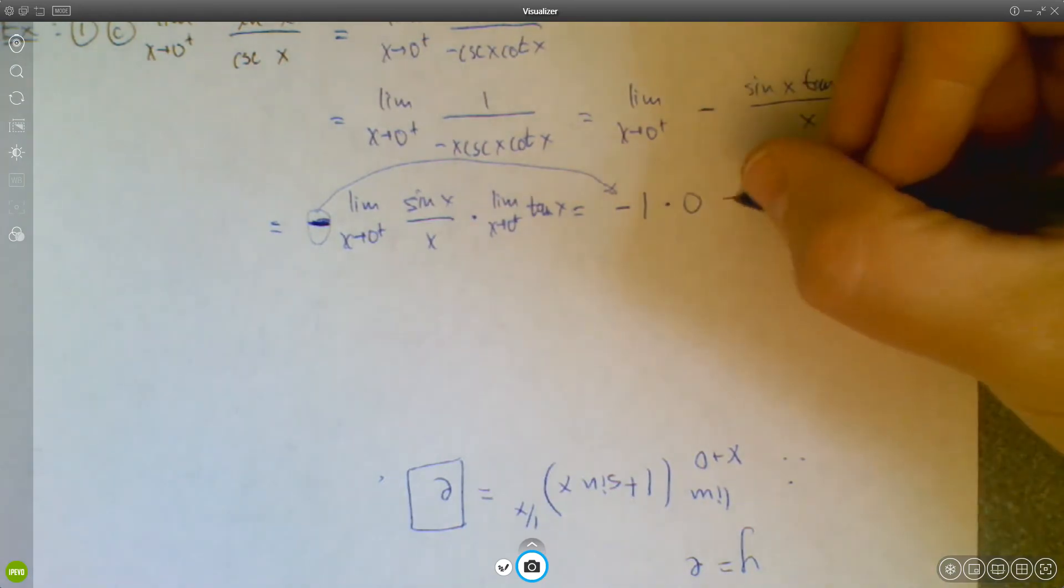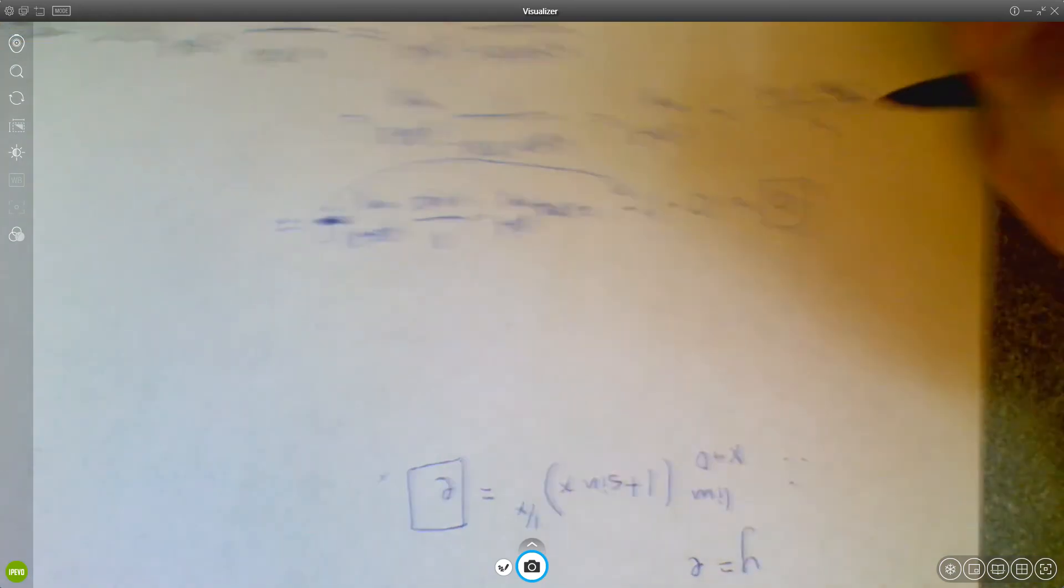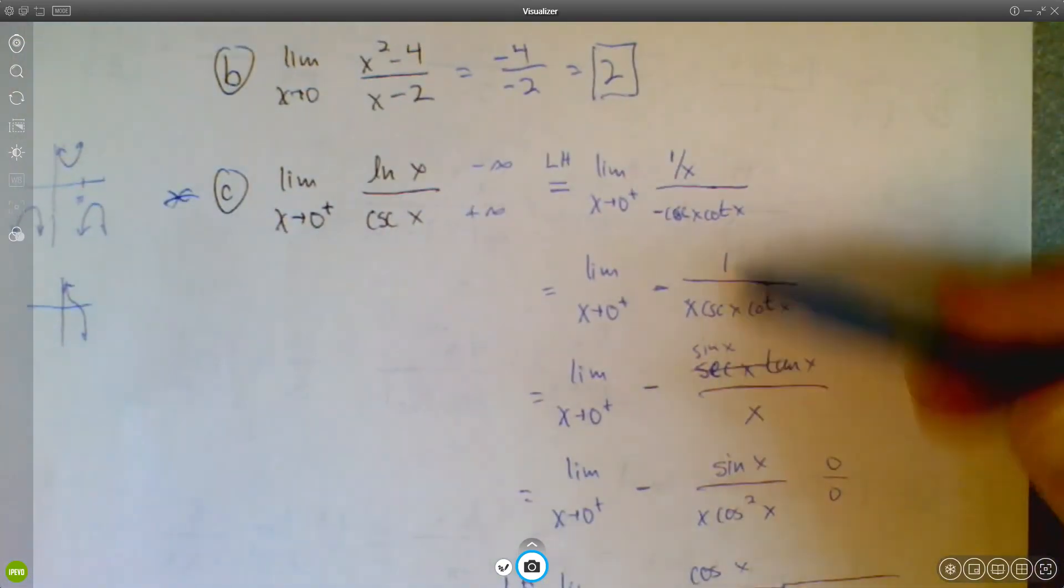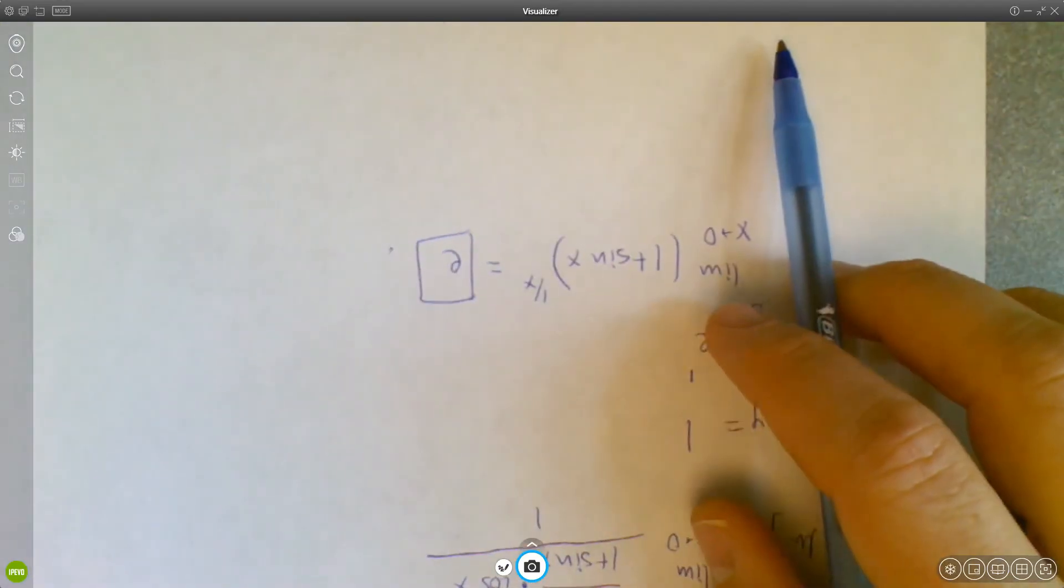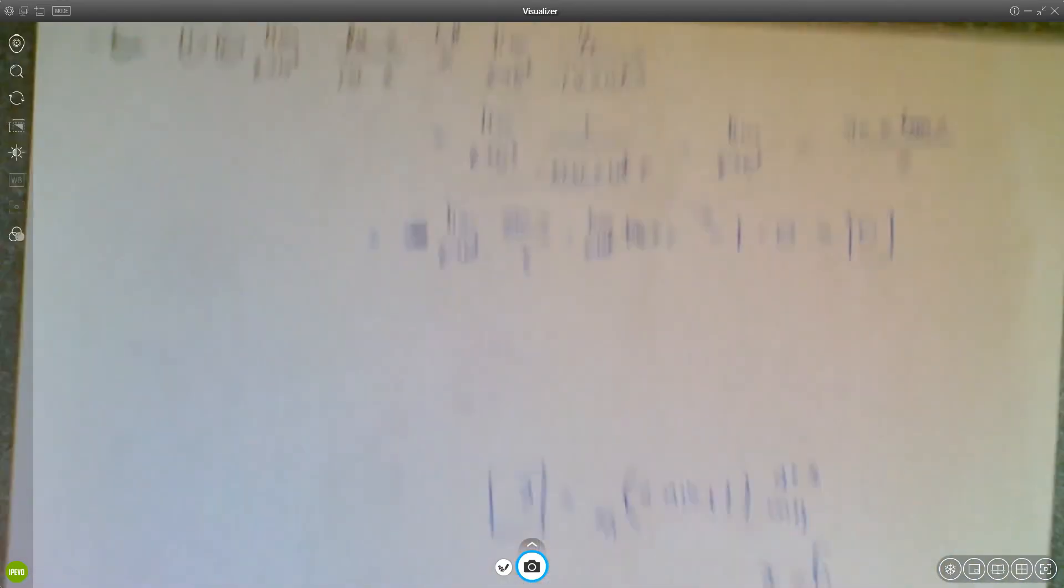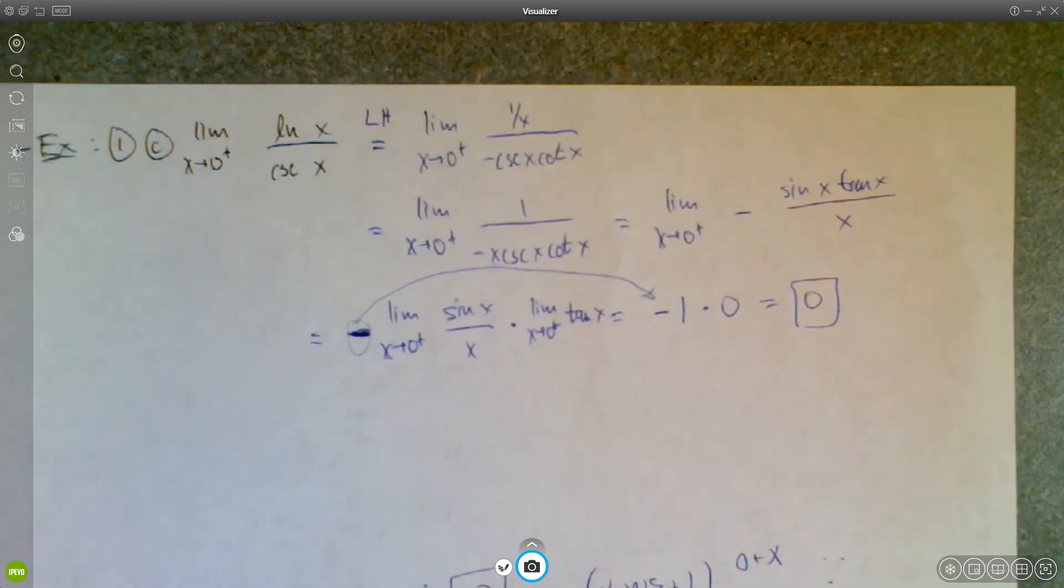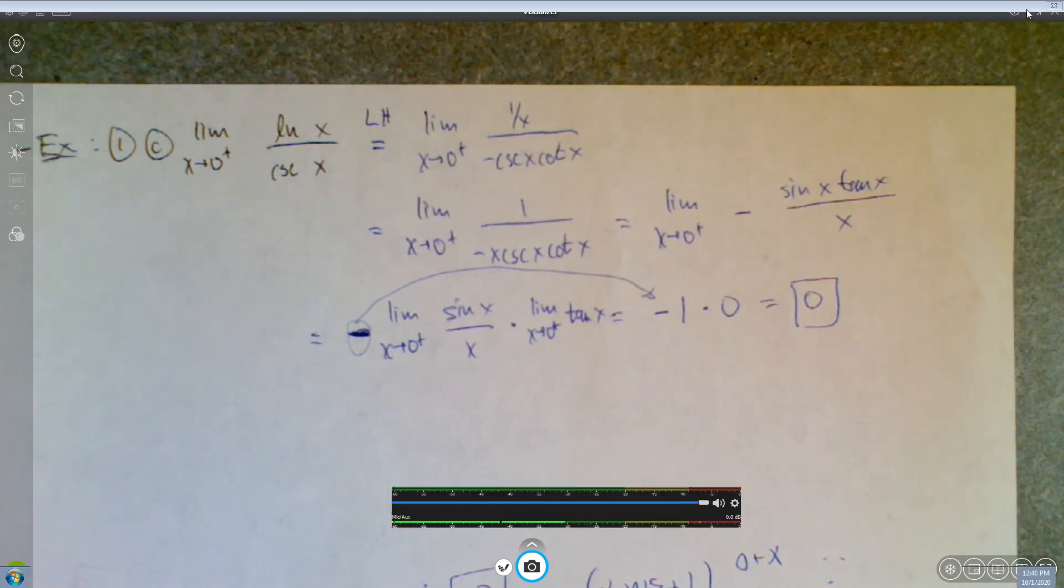So you should get negative 1 times 0, which is 0, okay? And that's different from the answer that we got when I used the wrong reciprocal identity. We ended up with negative 1, but we should have just ended up with 0. And it's a much shorter problem when you don't mess up on the trig. So anyway, so that was my mistake on that one. I apologize.